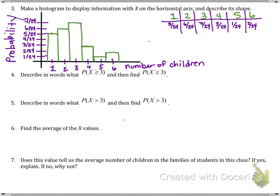Now I want to say in words what does P(X ≥ 3) mean and find the probability that X is at least three. So the probability of at least three children, the probability of three or more children in a family.